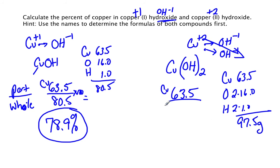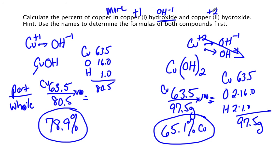It's a bigger compound, more mass in it, more particles in it. So ninety seven point five grams and then divide the two, multiply by a hundred, and I get only sixty five point one percent copper. So if I had to make a comparison here I would say that copper one hydroxide has more copper and copper two hydroxide has less copper.